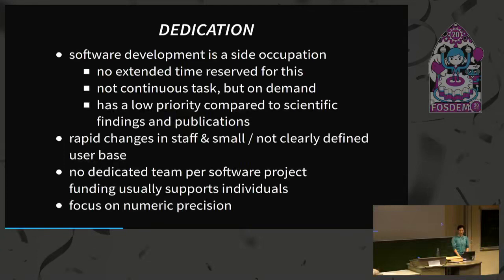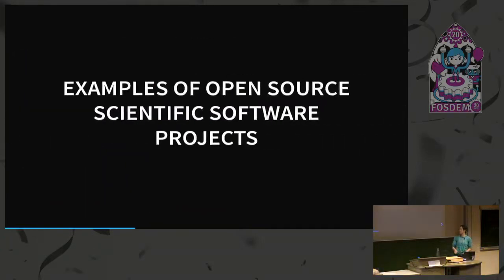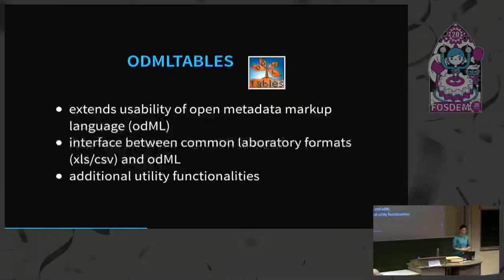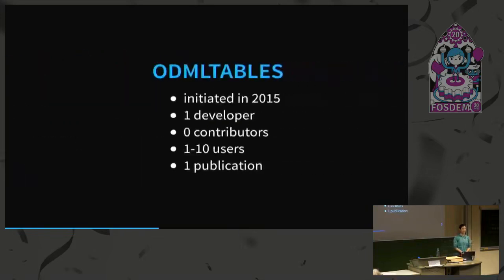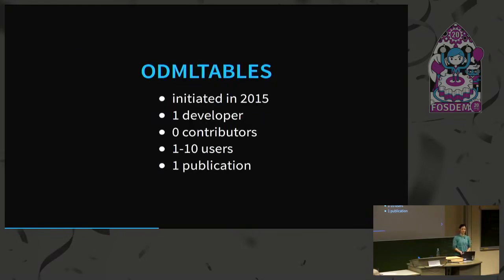Let me show you a couple of examples of scientific software projects on all scales. OtMLTables is a rather tiny one — an add-on to the odML open metadata markup language, providing an interface to make the standard more usable in a laboratory environment. This project is rather young, only a couple of years old, with only one developer, no contributors, only a few users, and one publication referencing it. Basically, if this one developer decides to leave science, the project is done.